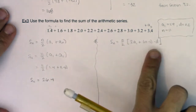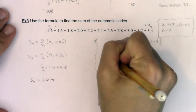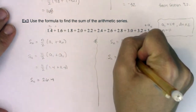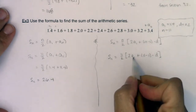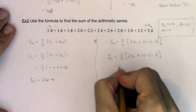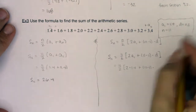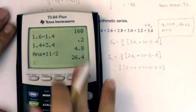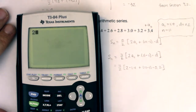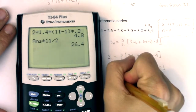Now let's try the second formula — that should be my answer and I'll check it in a moment. S_sub_11 here would be 11 over 2 times (2 times a_sub_1 plus (11 minus 1) times d). I know a_sub_1 is 1.4 and d is 0.2. So: 2 times 1.4 plus (11 minus 1) times 0.2, all multiplied by 11 halves — and there it is: 26.4.